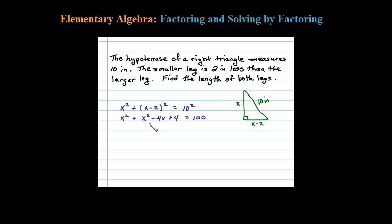Once we multiply that out, let's collect same-side like terms. So 2X squared minus 4X plus 4 equals 100. Now this is a quadratic. To solve quadratics, all the techniques that we have so far require this to be equal to 0, so let's subtract 100. That'll leave us with 2X squared minus 4X minus 96 equals 0.